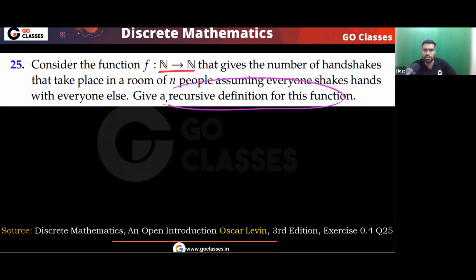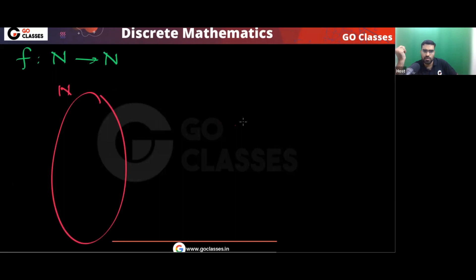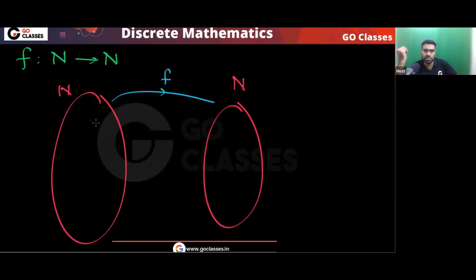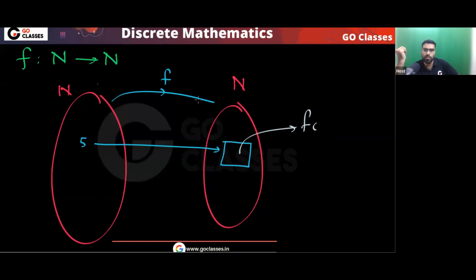Give a recursive definition of this function. First, understand this function — it is from N to N. For example, if you take a value 5, then f(5) will tell you how many handshakes there are if 5 people shake hands with each other.